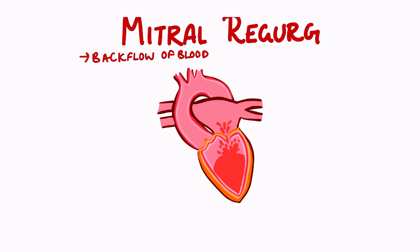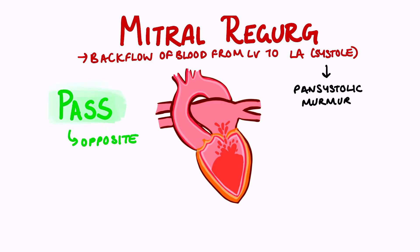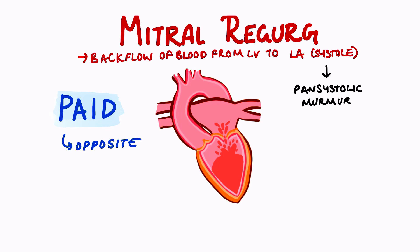Similar to aortic regurgitation, mitral regurgitation is when there is a backflow of blood from the left ventricle back into the left atria during ventricular systole — when the ventricles are contracting. Therefore mitral regurgitation is known as a pan-systolic murmur, meaning it occurs throughout systole. Using the opposite of PASS PAID, since aortic and pulmonary regurgitation causes a diastolic murmur, mitral regurgitation is systolic, specifically pan-systolic.